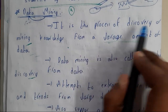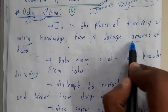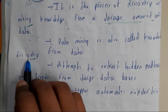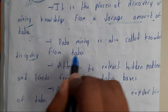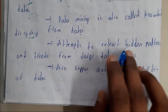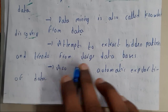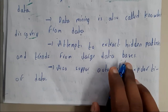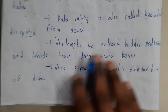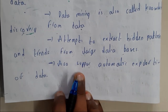Data mining is the process of discovering or mining knowledge from a large amount of data. It is also known as knowledge discovery in data. It attempts to extract hidden patterns and trends from large databases, and also enables automatic exploration of data.